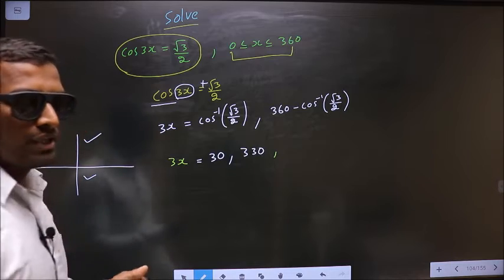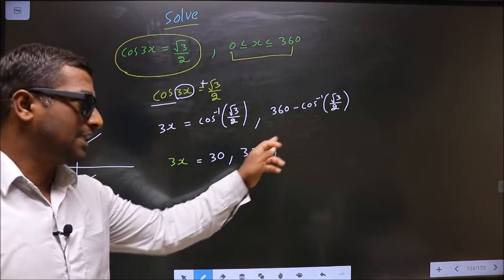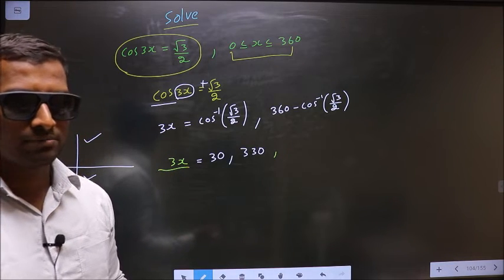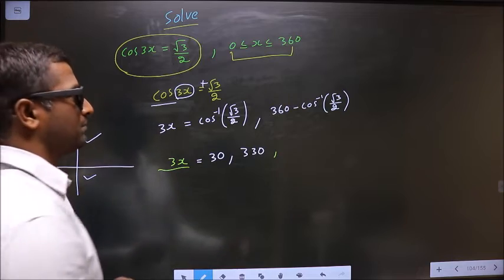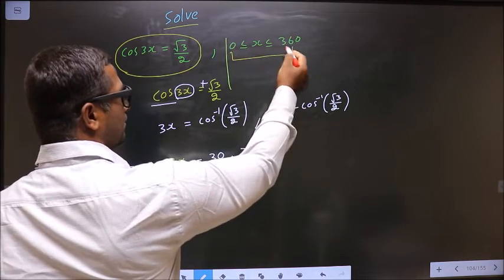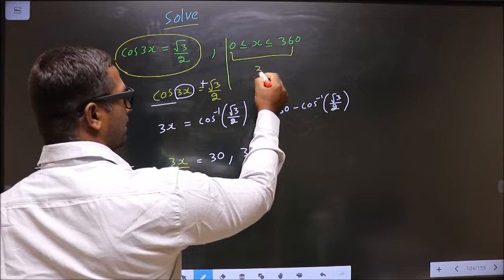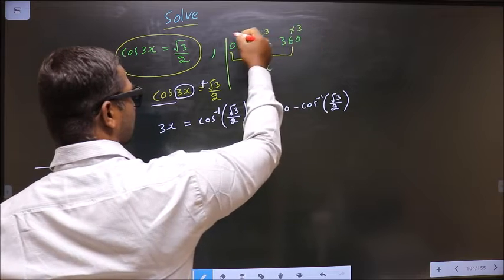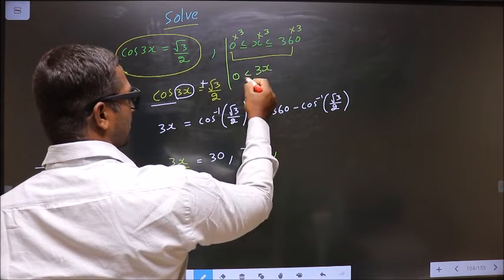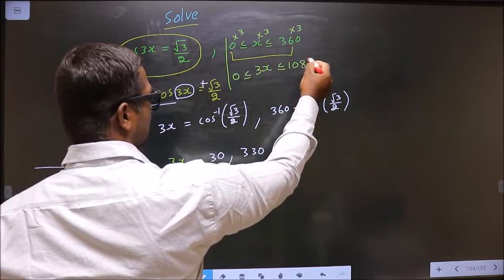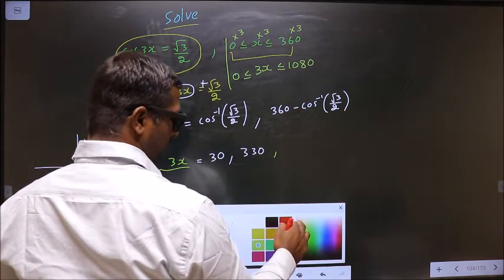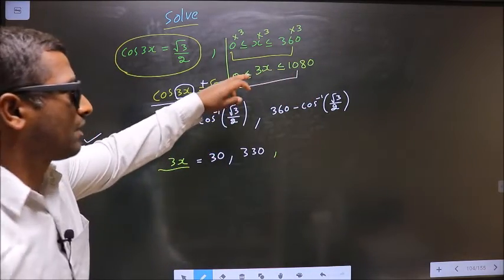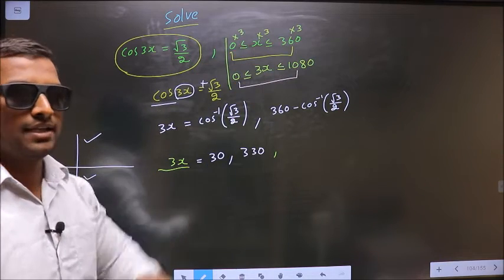Now how will we decide whether I shall find any more angles for 3x or not? We decide in this way. See x lie in the interval 0 to 360. Then what interval will 3x lie? To answer that you multiply by 3. So we get 0 less than or equal to this less than or equal to 1080. So now 3x value should lie in this interval.